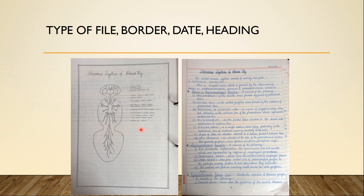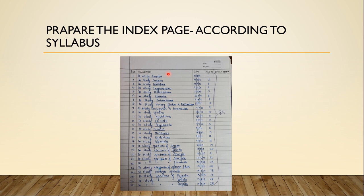The next topic is the index page. The index page should be made according to the syllabus and at the beginning of the semester. Some students make index entries as they go, but the problem with that is that topics are not always done in the order of the syllabus. If you make the index page according to the syllabus, you will know which experiment goes at which place, so you can leave some pages blank and maintain a well-ordered, well-organized file.